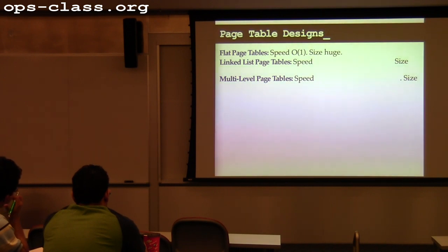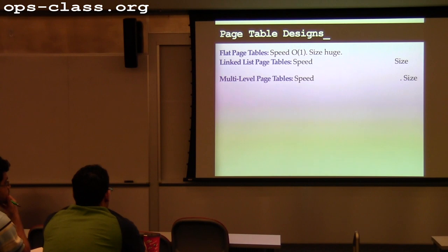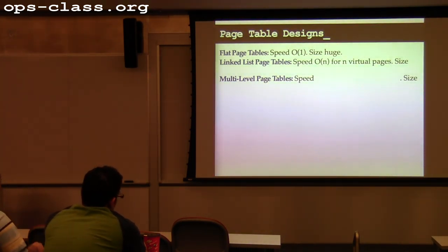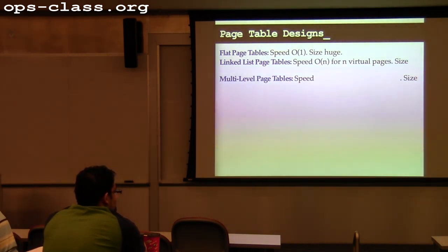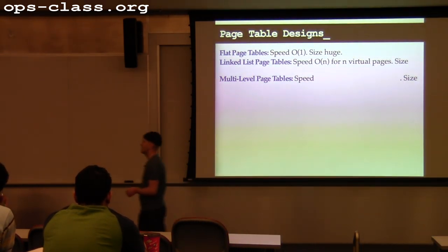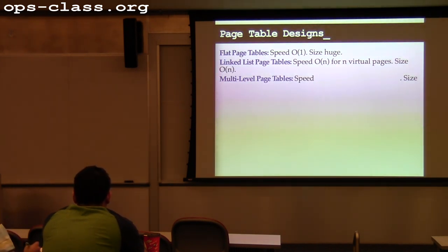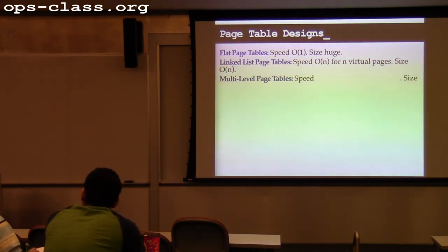Linked list page tables: I create a new entry for every PTE. Speed is O(N), where N is the number of virtual pages — it's a flat data structure and I just have to search the whole thing. Size is also O(N) — one link in the list for every page.